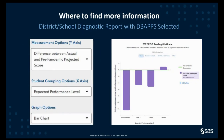This is a sample district or school diagnostic report. You might already know that you can graph growth measures for different groups of students to understand learning trends in the district or school. But in addition to selecting growth for this graph, one of the measurement options is the difference between actual and pre-pandemic projected score. You can plot this on the y-axis and then select your x-axis — I like the one that groups students according to their expected performance level, but there are a lot of options for you to choose. The LEA report that you received this year and last year summarizes information across your LEA, but this report is a great way to dig into results for individual schools.